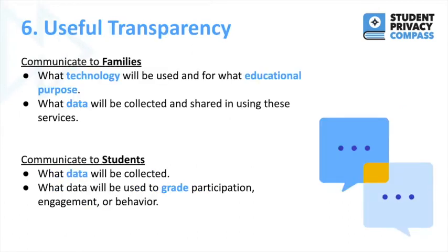The sixth best practice we want to discuss in protecting student privacy is about transparency and communication to families and students. Families should be communicated about the technology that will be used and for what educational purpose that tech serves. They should also be informed about the type of data that will be collected and shared. Students should be communicated about what data will be collected and, more specifically, what data is going to be used to grade participation, engagement, or behavior.